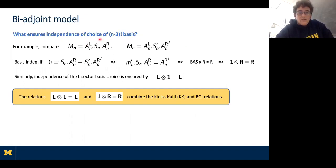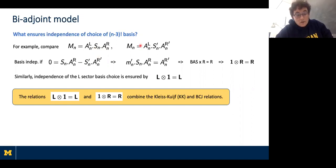Let's see how that works in practice at four point. The biadjoint amplitudes with two color orderings include contributions from Feynman diagrams compatible with both orderings. With both orderings the same, I get the s and u channels; if I switch the order of three and four in the second entry, only the s channel contributes and I pick up a minus sign. The KLT kernel is the inverse of these, and at four point (n-3)!=1, so I simply get the nine simple kernels. Setting the cubic coupling g=1 gives exactly the kernels shown in the first part of the talk. Writing out the double copy explicitly, the KK-BCJ relations also follow from those things.